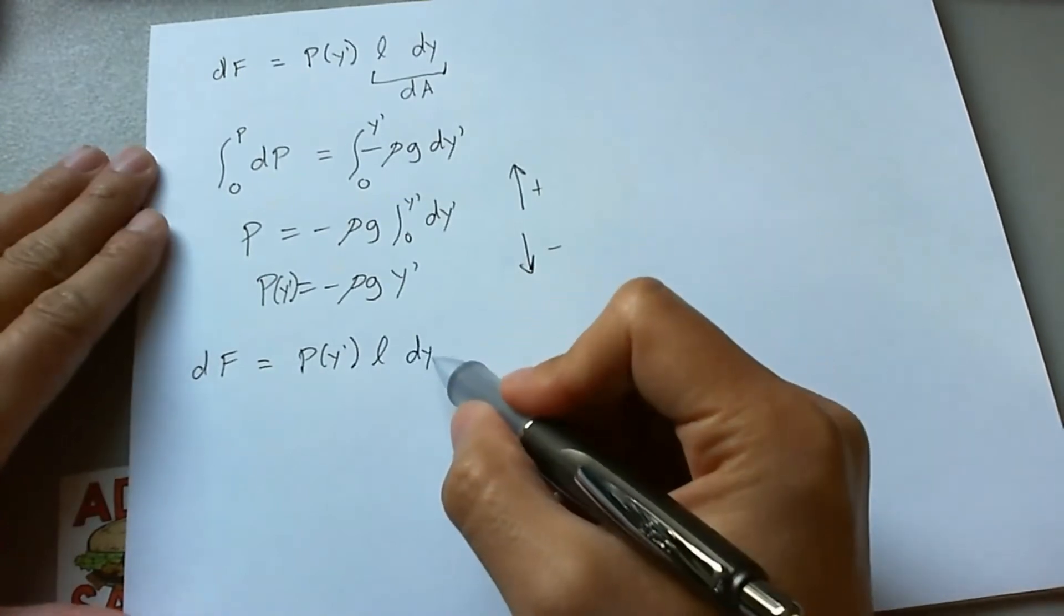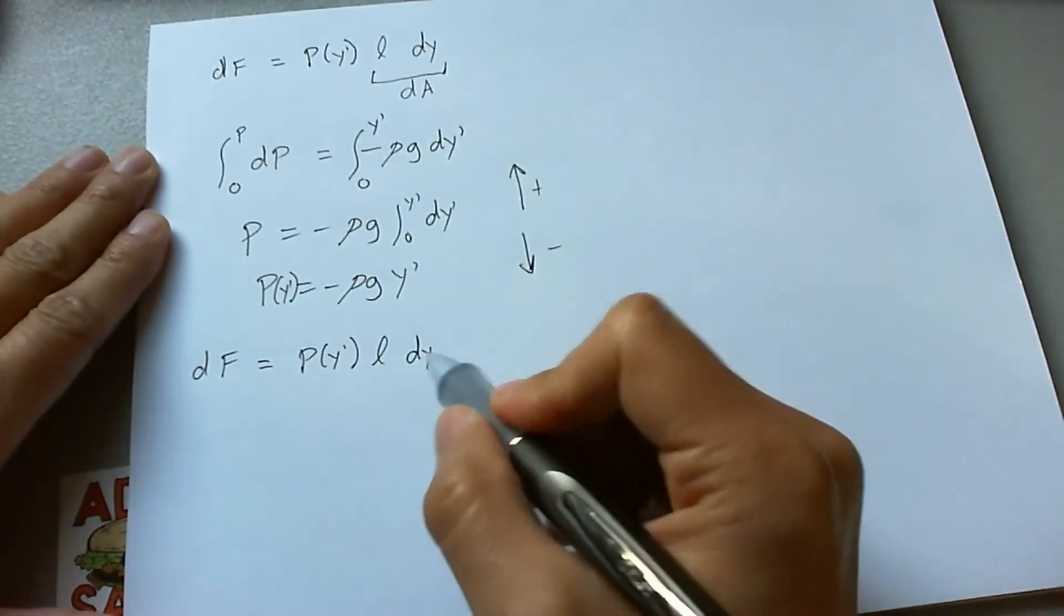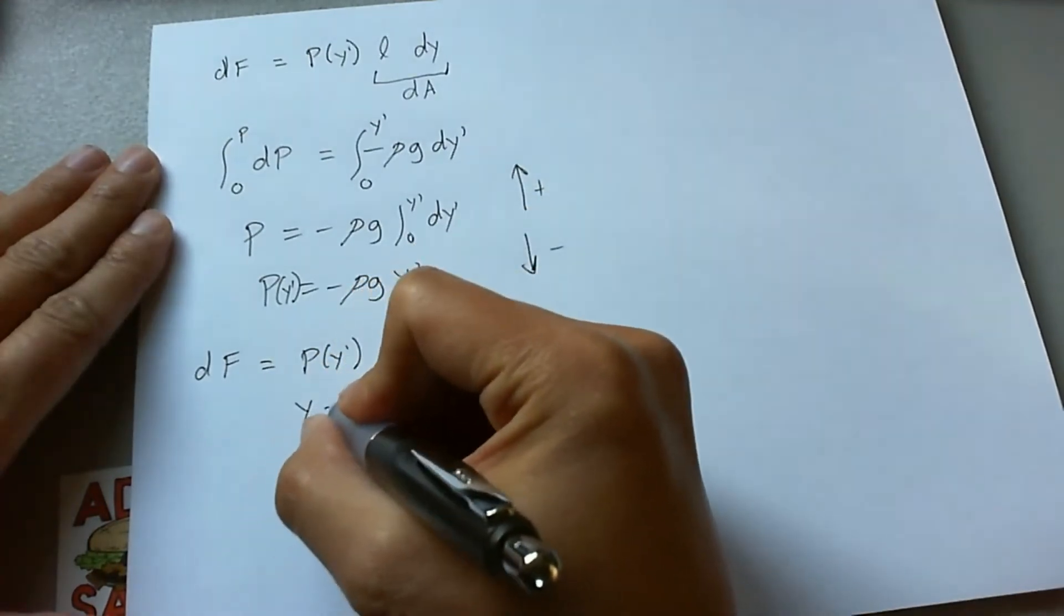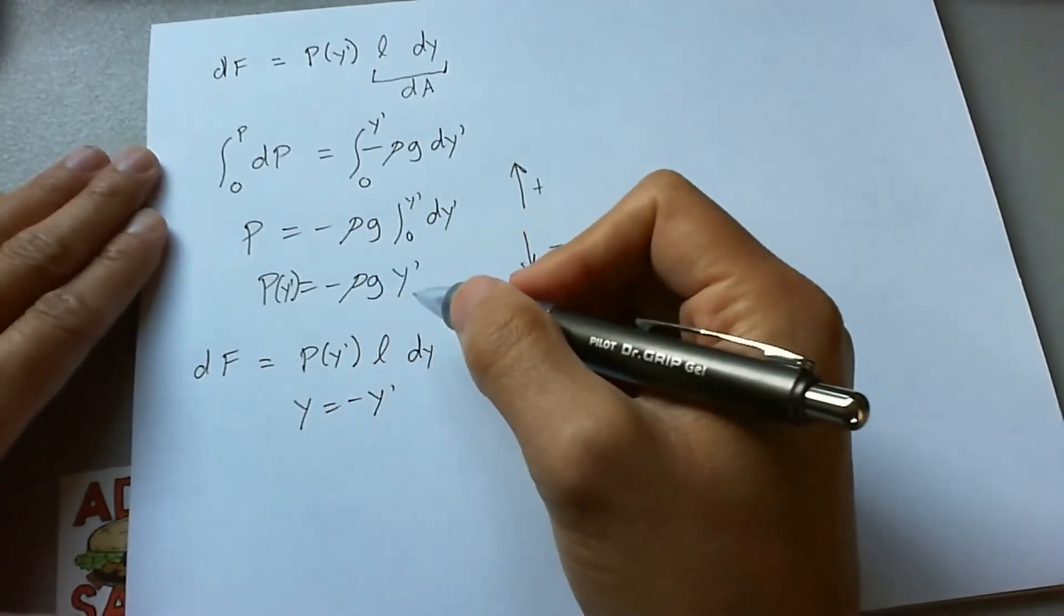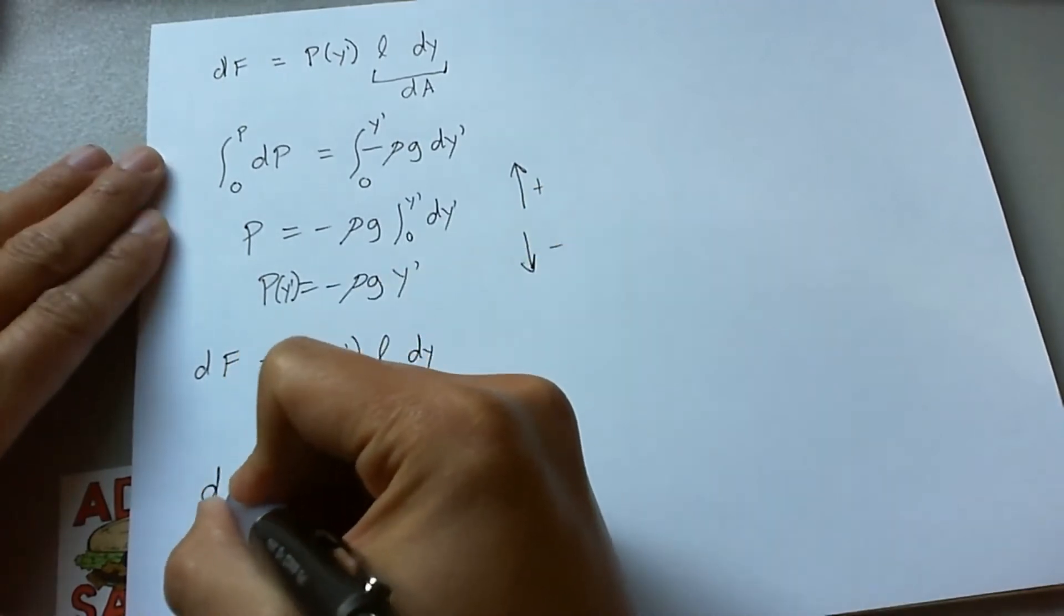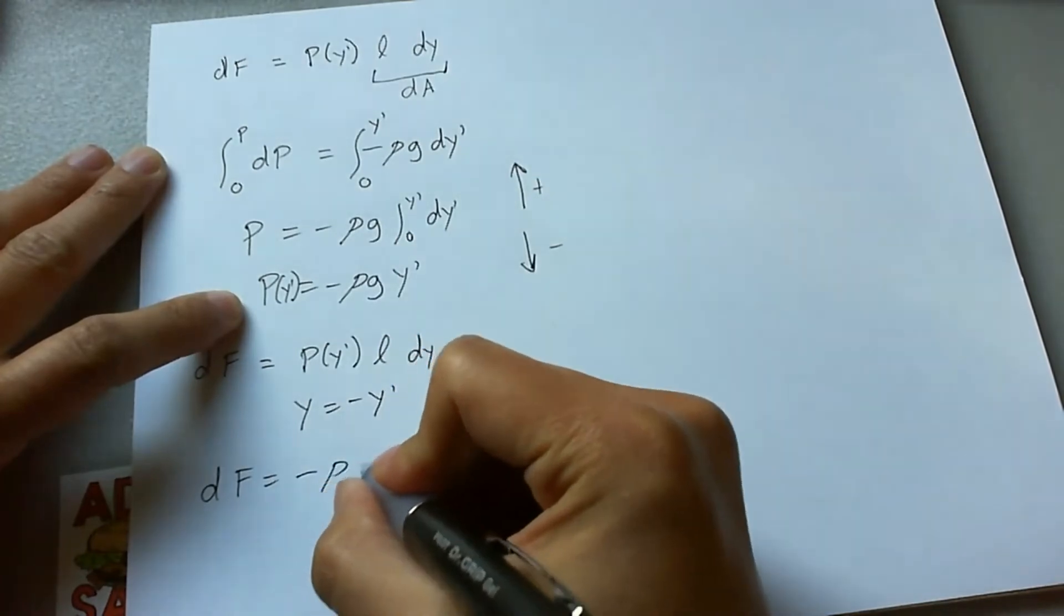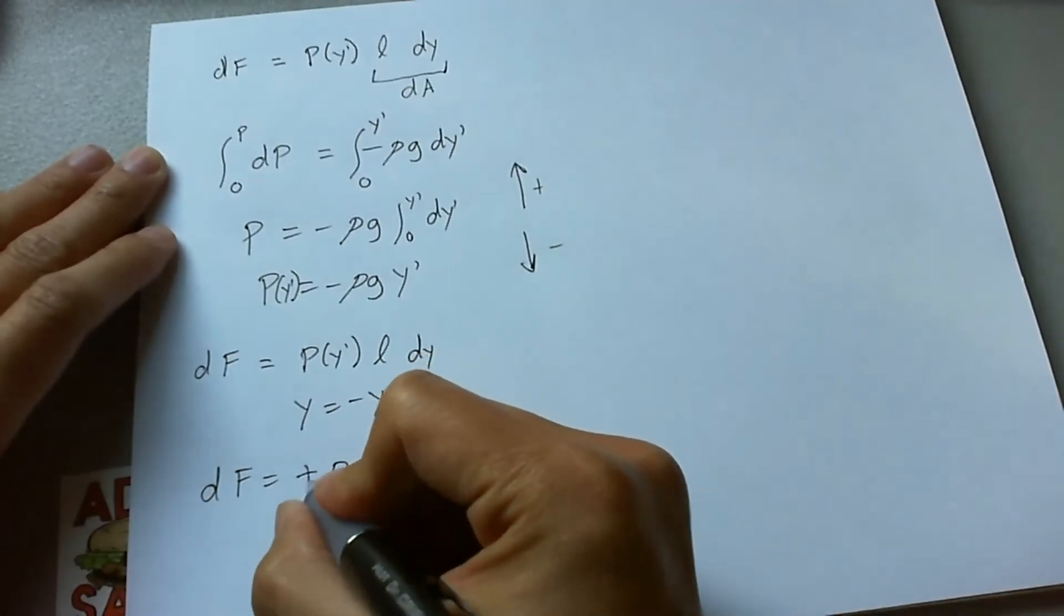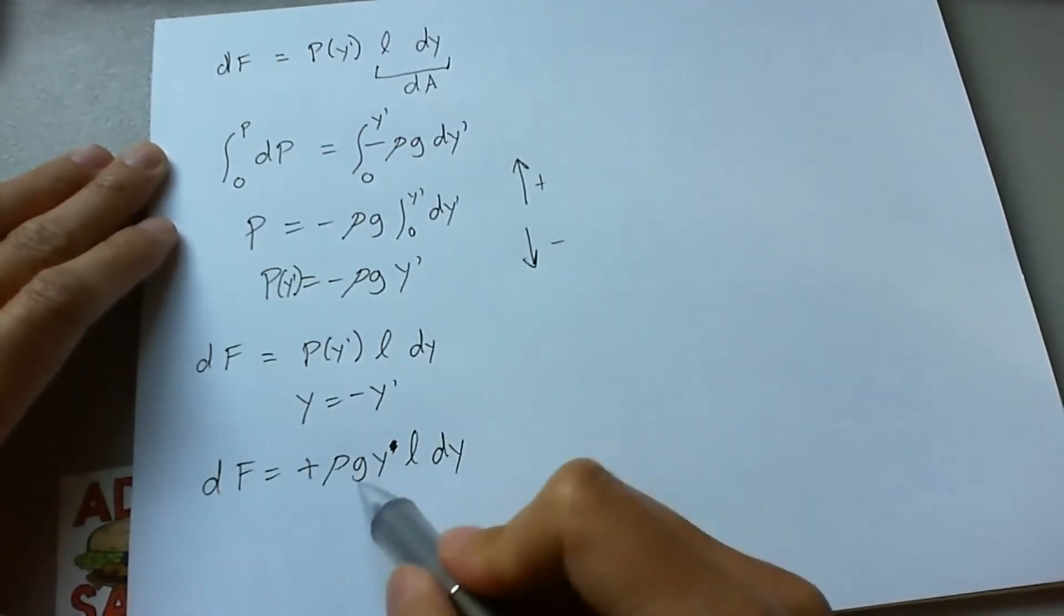So the transformation really is that y is equal to -y'. So if we're going to do that transformation, we're going to have to carry that negative over in this function. So when we say that dF = -ρg y' L dy, what we really mean to say is that it's positive y non-prime. And that will basically make the two y's equal.